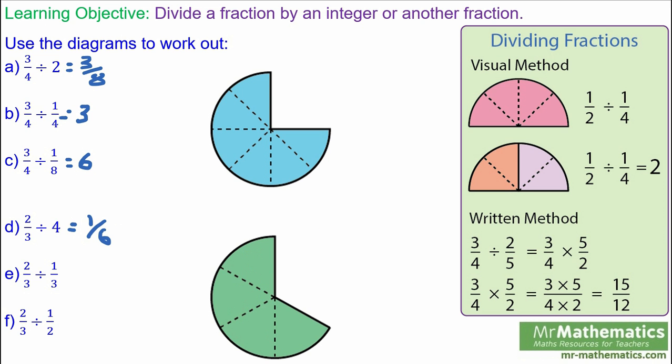Two thirds divided by one third. We're going to split the shape up into thirds, and you can see you've got two thirds: one, two.